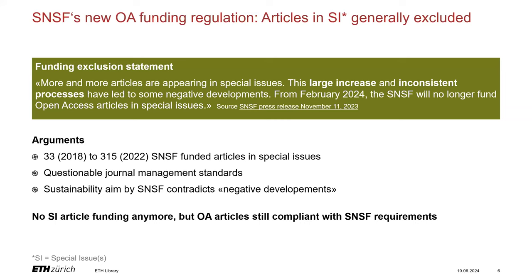Financial resources are used up which are then no longer available to the SNSF for funding new research. Although the SNSF has adjusted its open access funding criteria, it does not differentiate between traditional journal articles and articles in special issues when assessing whether an article fulfills the grant requirements — meaning openly accessible articles from both types are compliant with its grant regulations. It is very important to emphasize that even though the SNSF excludes special issues from OA funding, special issues have a long tradition in scholarly publishing and are by no means predatory or dubious per se.